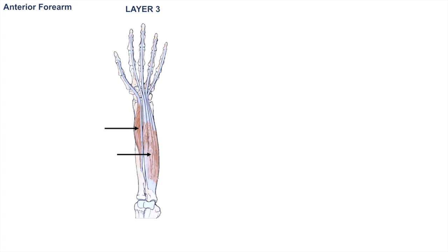Moving on to layer three, we see two more muscles beneath flexor digitorum superficialis. These are the flexor pollicis longus — "pollicis" means it runs to the thumb — and the flexor digitorum profundus. "Digitorum" again because it leads to the digits, and "profundus" actually means deep, so it is deeper than the flexor digitorum superficialis.